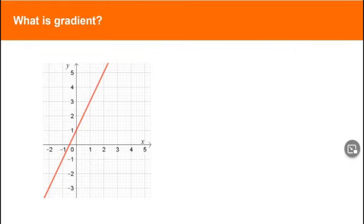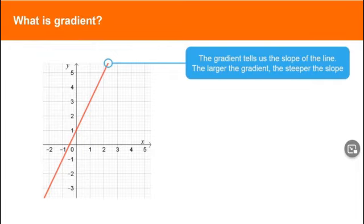We often need to find the gradient of a straight line on a graph. The gradient tells us the slope of the line. The larger the gradient, the steeper the slope.